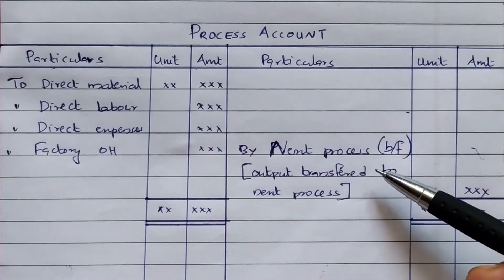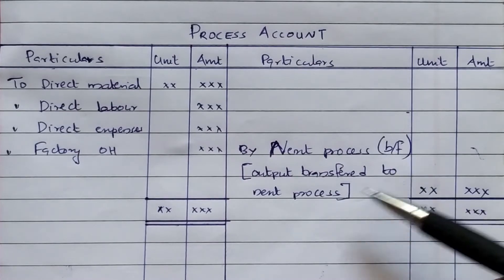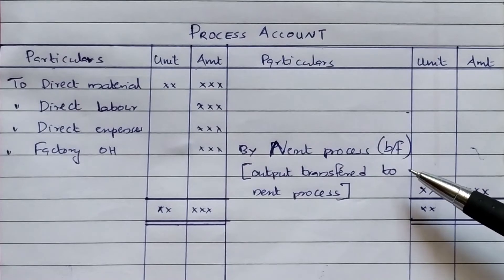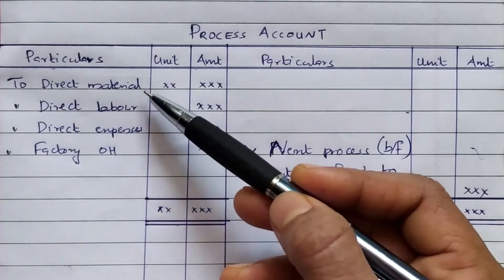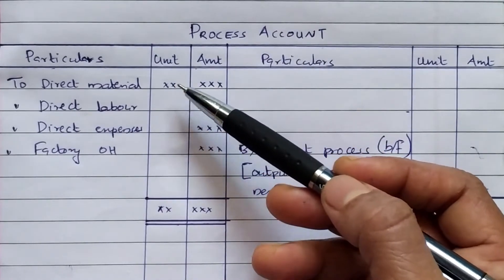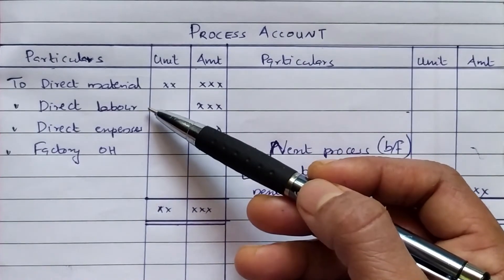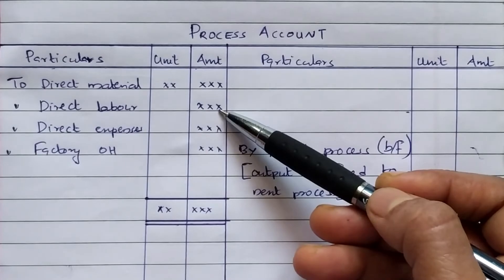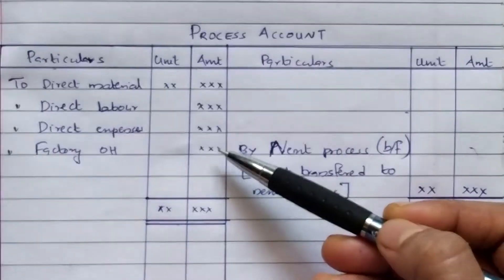The basic idea is that for a particular process, the process account will be debited and credited accordingly. On the debit side we record direct materials. Direct material cost is, for example, 10 per unit. We also record direct expenses at 7 per unit, and 3 per unit for factory overhead.